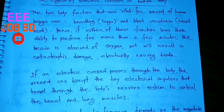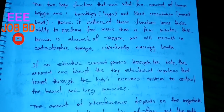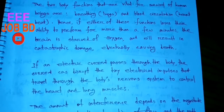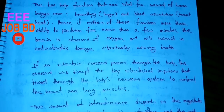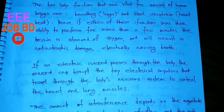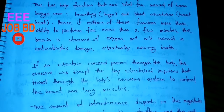If an electric current passes through the body, the current can disrupt the tiny electrical impulses that travel through the body's nerve system to control the heart and lung muscles. If an electric current passes through the body, the current disrupts a very important function of the nerve system and the heart system, including the electrical pulse system.